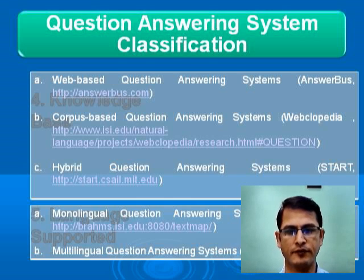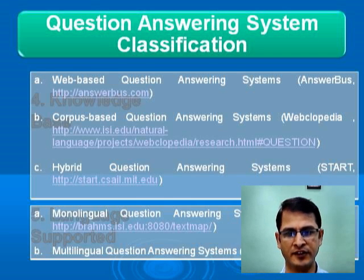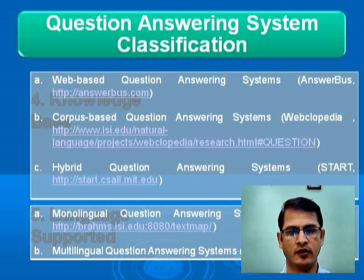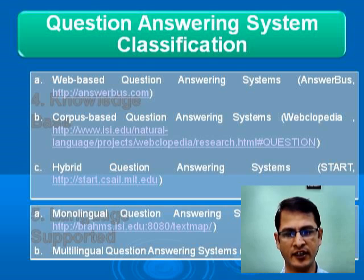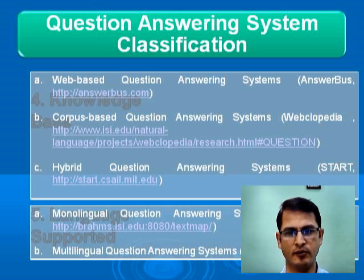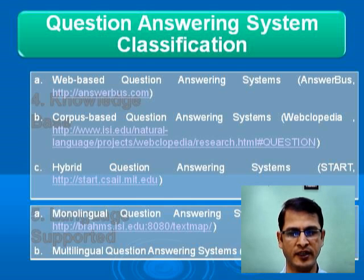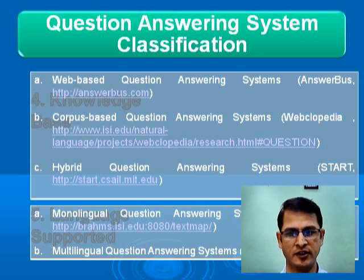Finally, we can classify question answering systems according to language. Monolingual question answering systems use documents from a single language and accept questions from a single language. Multilingual systems accept questions from multiple languages and give answers in multiple languages.